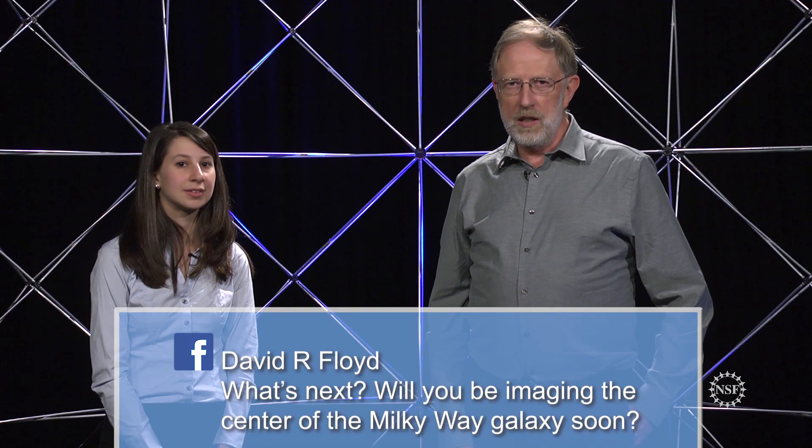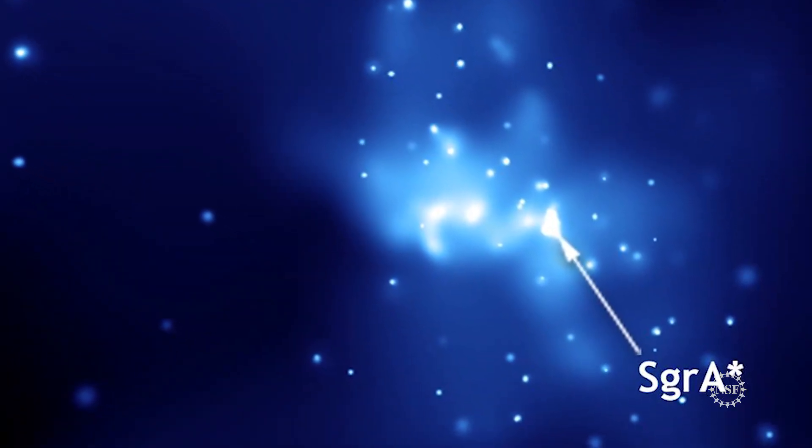What's next? Will you be imaging the center of the Milky Way galaxy soon? There are two primary targets for the Event Horizon Telescope. One is the black hole in the center of the M87 galaxy, 55 million light years away. The other is called Sagittarius A star, which is at the center of our own Milky Way galaxy. These are the two that we think, with the resolution of an Earth-sized telescope, we would be able to see. But these are actually very different black holes. The M87 black hole, because it is 6.5 billion solar masses, is so big that gas is not moving around it that fast. Over the course of a night, we can assume that the measurements we take are all coming from the same picture — it's essentially a static black hole within the course of a night.